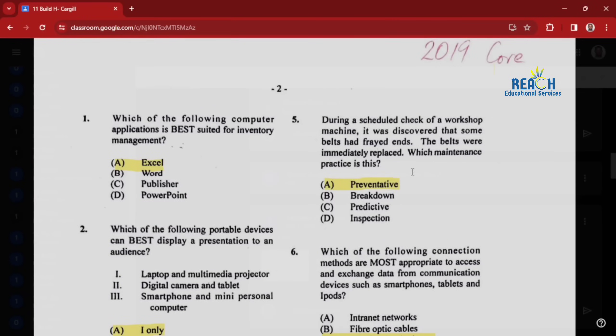Good day everyone, Mr. Cargill here with our next video. In this video we're going to be looking at the 2019 Industrial Technology Paper One past paper. This is paper one for building construction or building and furniture technology, mechanical technology, and also electrical technology.